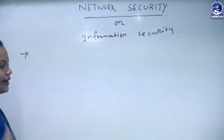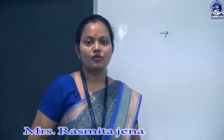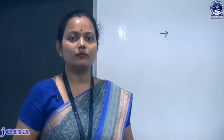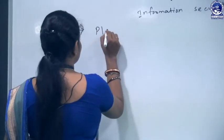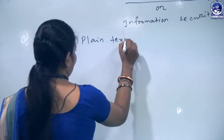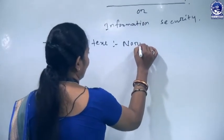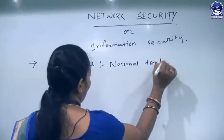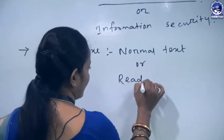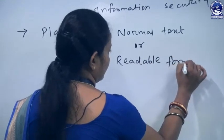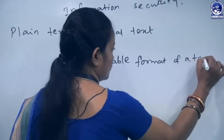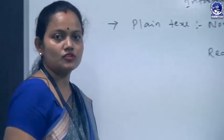The first concept in network security or information security is plain text. Plain text means which is easily readable by the user — you can say that is normal text, or the readable format of the text, which will be easily recognized or readable by the user.